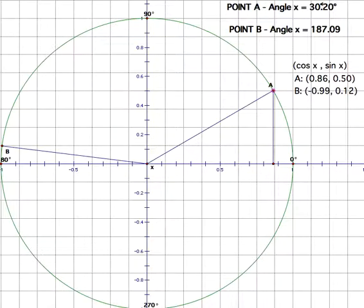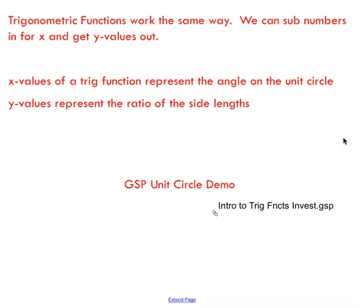Likewise, if I substitute in 30 degrees for x in sine of x, I get 0.5, which if you remember, if you think back to your special triangles, we know this to be true, the sine of 30 is one half. And that works for any value on the unit circle. As we rotate around, if we sub in x values into our function, we're going to get y values out that represent the ratio that we're dealing with. So for the cos function, we'd be talking about the adjacent side to the hypotenuse. For sine, we're talking about the opposite side to the hypotenuse. Just a little demo that I hope illustrates what we're dealing with with trig functions here.